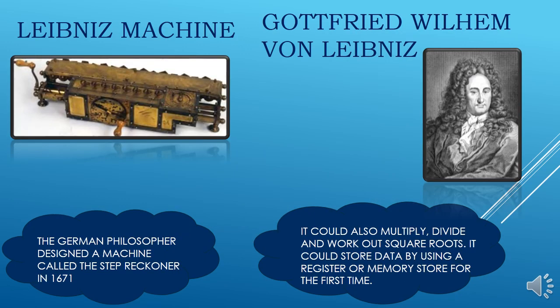Next, we have the Leibniz machine, which was invented by Gottfried Wilhelm von Leibniz. He was a German philosopher who designed the machine called the Stepped Reckoner in the year 1671. This machine could multiply, divide and work out square roots. It could store data by using a register or a memory store for the first time.